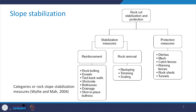There are basically two branches of this tree diagram. One deals with stabilization measures, the other with protection measures. As far as protection measures are concerned, ditches, mesh, catch fences, warning fences, rock sheds, and tunnels are used as protection measures.